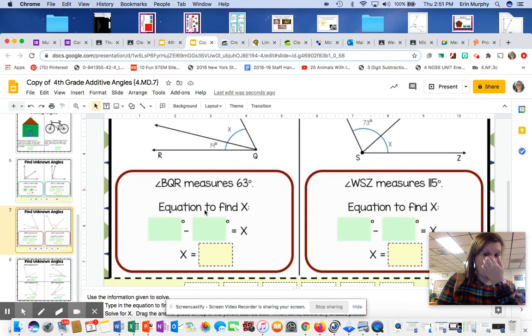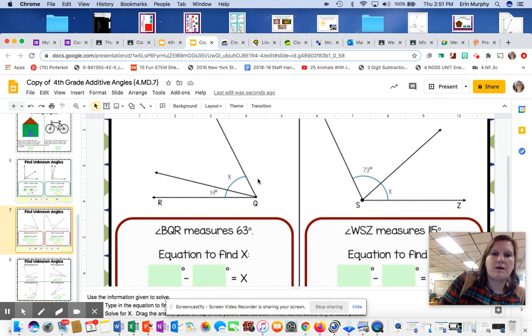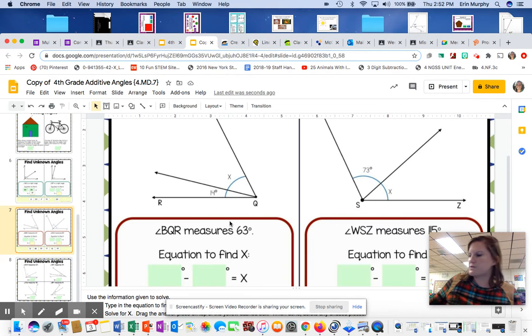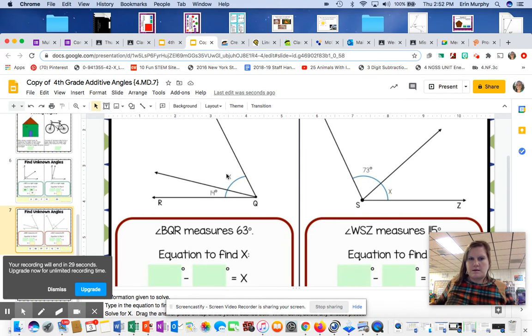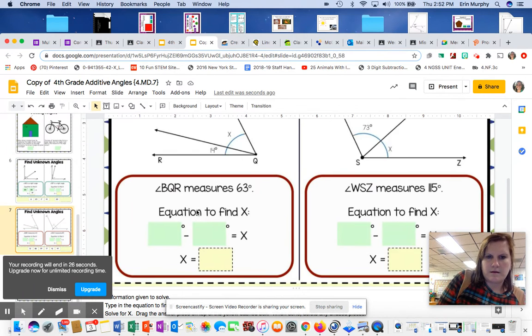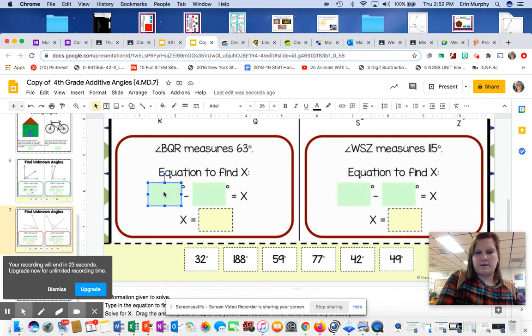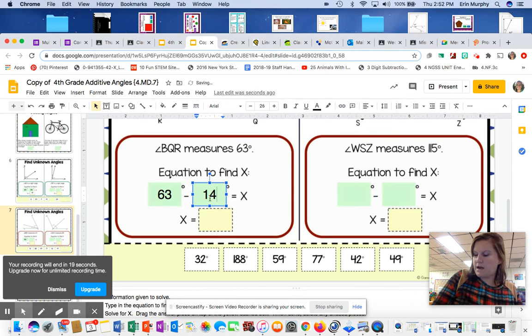Okay, on this slide, you have BQR. This whole thing measures 63. It'll even tell you it measures 63 degrees. Part of it equals 14. I want to know what the rest is. So I'm going to have to, I know the whole thing is 63. Part of it is 14. What is the rest? So I'm going to have to subtract. And I get 49. So I said 63 minus 14. And I got 49.